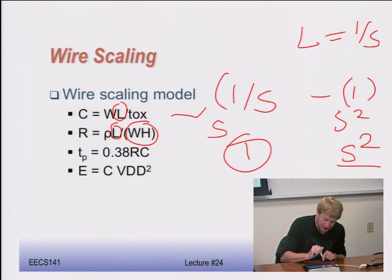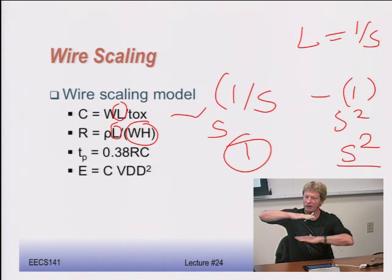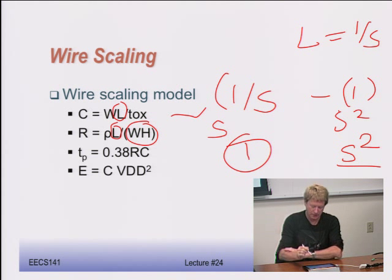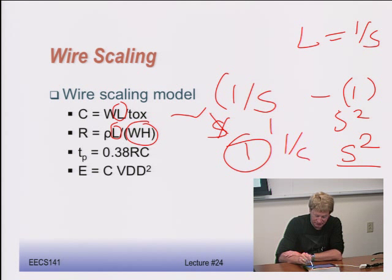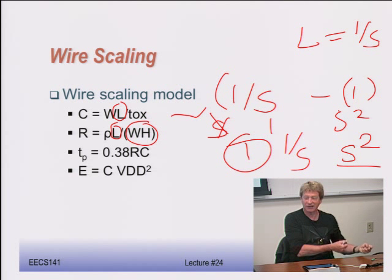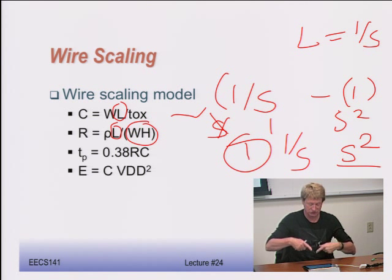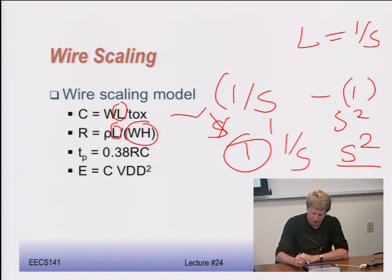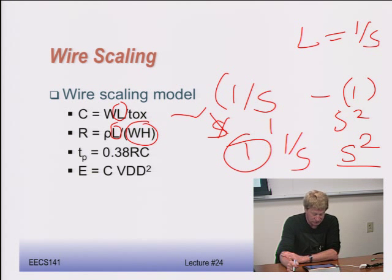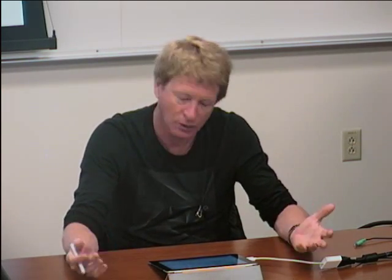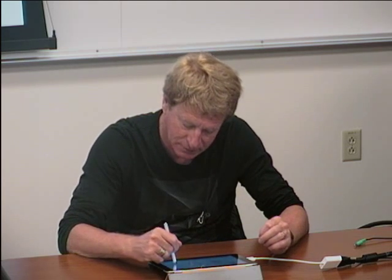The solution technology has used is to keep the wire height H constant — not shrink it — and make wires taller and more vertical. Now the cross-section term becomes 1/s instead of 1/s², which means resistance scales as 1/s rather than s, and local wire delay scales as 1/s — matching transistor speed improvements. For long wires, instead of s², you get s. This is why modern processes use many metal layers with tall wires.